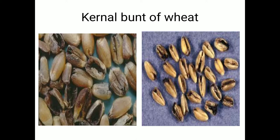The next disease is kernel bunt of wheat. This disease is mostly observed in Karnal district in Haryana state, so it is called kernel bunt of wheat. It is caused by the fungus Neovossia indica. The grains are partially or completely transformed into a blackish powdery mass. Bunt is essentially smut — blackish powder is observed inside and sometimes outside the seeds.